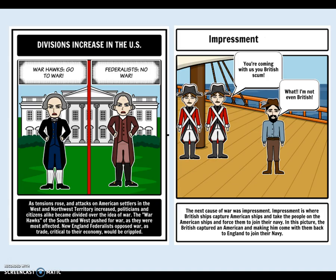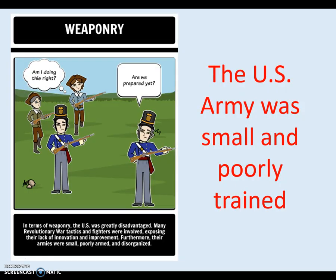The United States was still upset at what the British were doing — taking our sailors and taking our ships. A group of young congressmen began calling for war, known as the Warhawks. The Warhawks really wanted the United States to go to war with England because of the impressment of sailors and seizure of ships. And that's exactly what happened — the United States ended up fighting a war with Great Britain, now called the War of 1812, though back then it was called the Second War or the Second American Revolution because it seemed like a continuation.